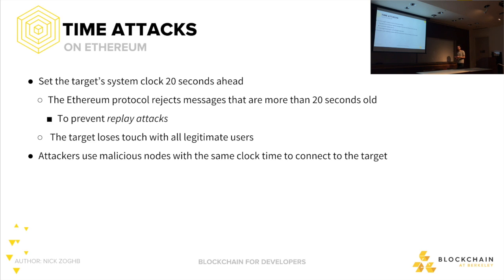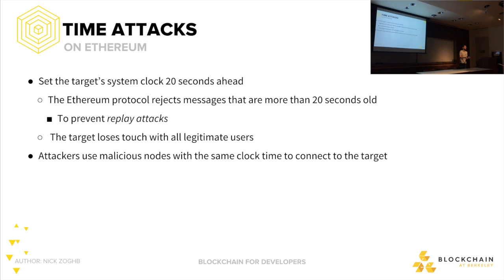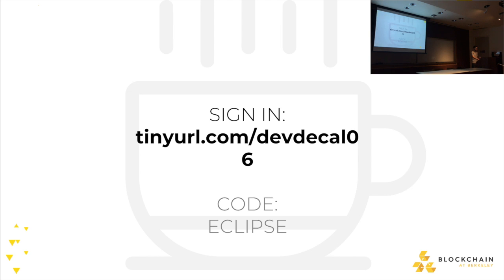Lastly, time attacks are very simple. If an attacker can get their hands on your system clock and set it a little more than 20 seconds past actual time, the network will ignore you. If the attacker sets their system time to the same as yours, they can connect to you and you will interact with them as if they were the real network.